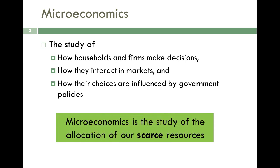So what are these decisions they're making? Certainly it's about buying and selling — how much to produce, what price to sell it at, how much to buy, what price to pay for it, those sorts of decisions. And as these decisions are being made by buyers and sellers, they're having to face an unpleasant reality: their resources are scarce. Since we don't have an infinite amount of everything we could possibly want, we have to make decisions about how to use things. We use it one way, we can't use it another. And that's what we mean by the allocation of our scarce resources.